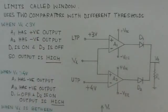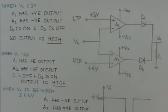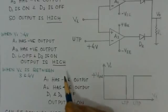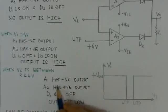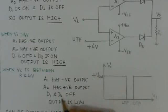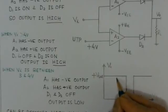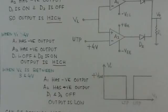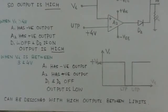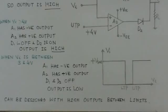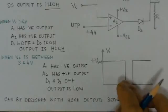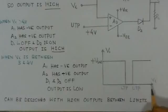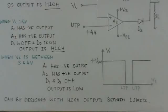When VI is greater than 4V, A1 has a positive output so D1 is off and D2 is on — output is again high. So the output is high when VI is outside the window (less than 3V or greater than 4V). When VI is between 3 and 4 volts, both A1 and A2 have negative outputs, D1 and D2 are both off, and the output is low. You can also design the circuit to be high within the limits and low outside. Window comparator circuits are very important and may appear in examinations.